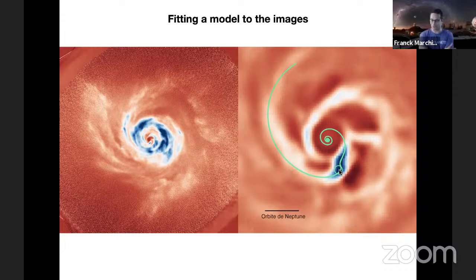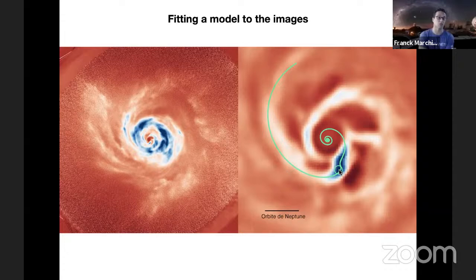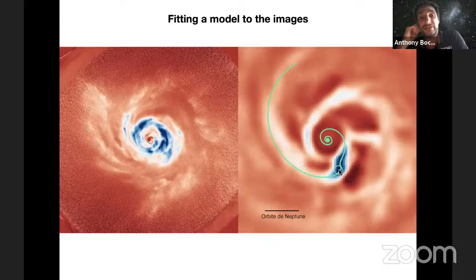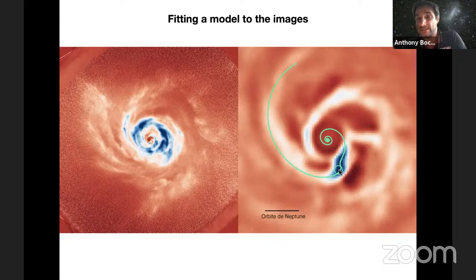A viewer asks whether the spiral structure suggests the planet could migrate inward or outward. Could we be seeing migration? I think it's too soon to say, because migration would take a lot of time — it's not something that happens in one orbit. It takes many orbits to move toward the star, so we would need many orbital periods before we could figure out if it is migrating.